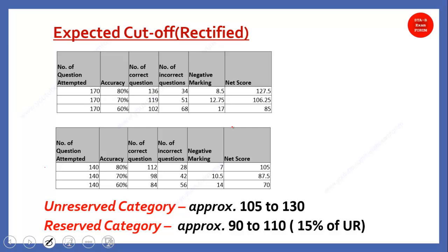I tried to do something new — here I have included accuracy as well: what happens if accuracy is 80%, what happens if it is 70%, or 60%. The maximum number of questions that I came to know from students is approximately 170, and the majority of students have attempted 140 questions. If you attempted 170 questions with 80% accuracy, correct questions are 136 and incorrect are 34. With negative marking, one-fourth of 34 is 8.5, so the net score would be 127.5. Similarly, for 70% and 60% accuracy it comes out to 106 and 85 respectively.